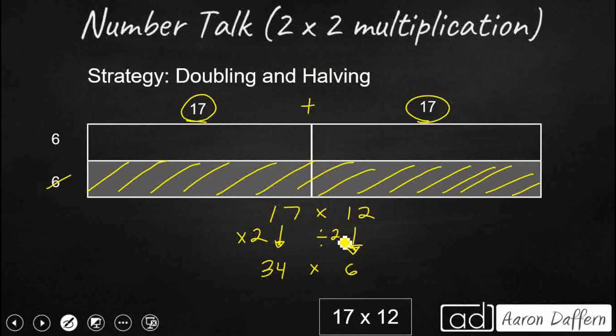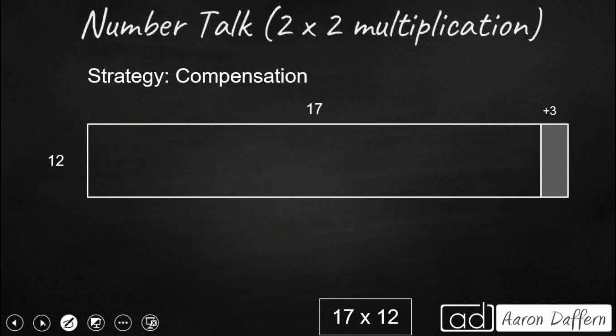So this might be a little bit simpler. You've got your 30 times 6, that's 180. You've got your 4 times 6, that's 24. And guess what you're going to get? Same answer, 204. So doubling and halving is a good strategy as well.